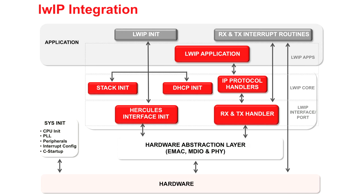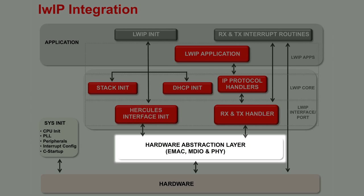The Lightweight Internet Protocol or LWIP is an open source implementation of the TCP/IP stack that is widely used in embedded applications. The LWIP stack runs on top of the hardware abstraction layer that connects the MCU to the external physical interface. The integrated software consists of four main layers. Number one, the hardware abstraction layer, which implements the lower-level hardware abstraction APIs that can be used for control and configuration of the EMAC device. The EMAC and MDIO layers are part of the Halcogen release and the PHY layer is part of the application.